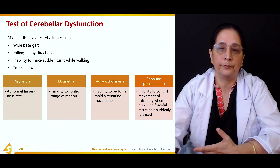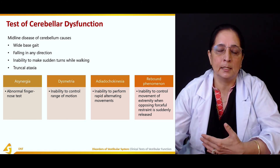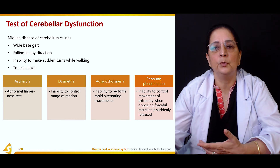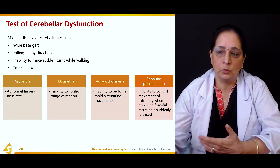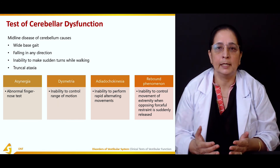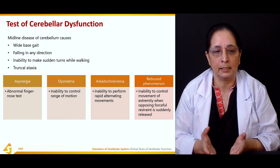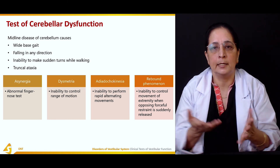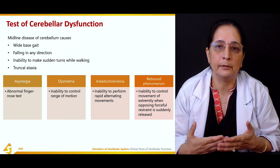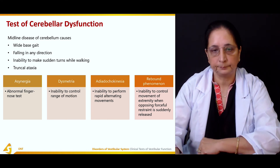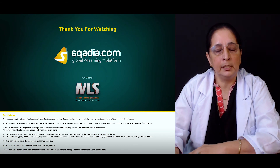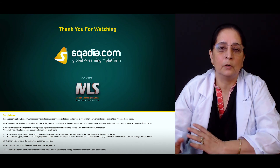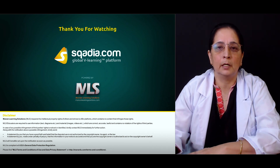The rebound phenomenon is an inability to control movement of an extremity when opposing force or restraint is suddenly released. All these signs — asynergia, dysmetria, adiadochokinesia, and rebound phenomenon — are present in conditions causing midline cerebellar problems. During neurological examination, doctors ask the patient to walk in a straight line, perform finger-nose testing, and do rapid alternating movements to check if cerebellar function is normal. That covers all the tests performed for central and peripheral vestibular disorders and to check nystagmus.